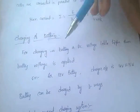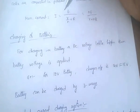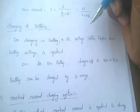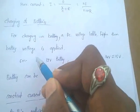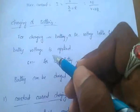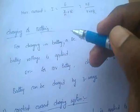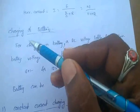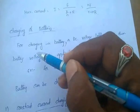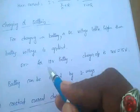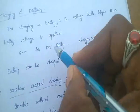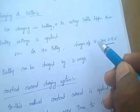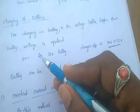Next topic is charging of batteries. For charging a battery, a DC voltage which is slightly higher than the battery voltage is applied. For example, in the case of a 12-volt battery, the charger output must be 14 to 15 volts — slightly greater than the battery voltage.